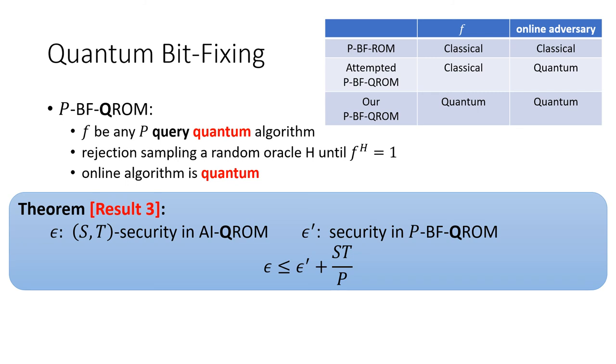With this definition, we show our quantum pre-sampling theorem, which simply follows from our classical proof. The bound is optimum in the sense that it matches the optimum classical bound. And this is our third result.